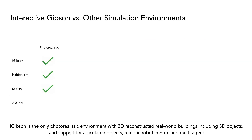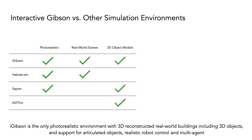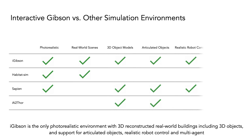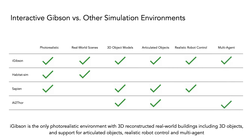In comparison to other simulation environments, iGibson is the only photorealistic environment with 3D reconstructed real-world buildings, including 3D objects and support for articulated objects, realistic robot control, and multi-agents.